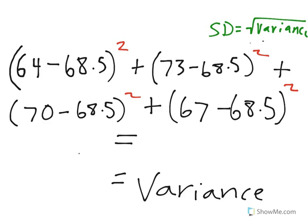After we find the average, we take each value from the table: 64, 73, 70, and 67, and subtract the mean from each of those values. Once we subtract the mean from each value, we square those results and add them all together.